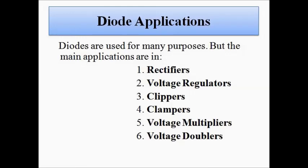The PN junction diodes are used for various purposes in many electrical and electronic circuits because of their unique property to conduct current only in one direction. It is a unilateral device — it allows flow of current only in a single direction. These are some of the applications of the PN junction diode.